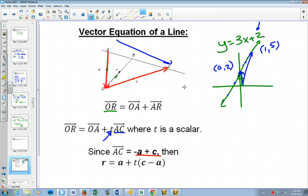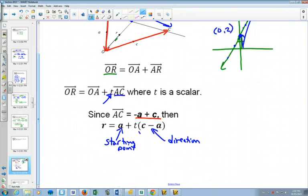This means that you can find any point on the line that includes A to C by starting at point A. So this A is any starting point. Then traveling in the direction that goes from A to C. And this t just determines how far in that direction.